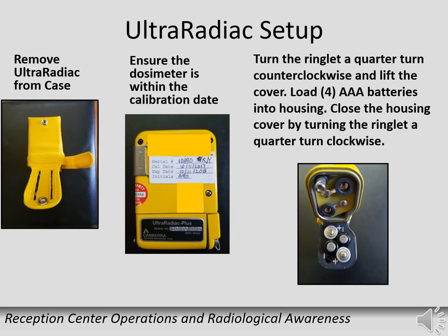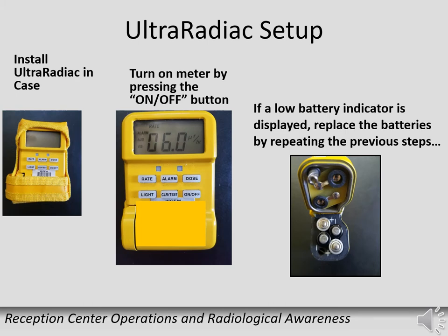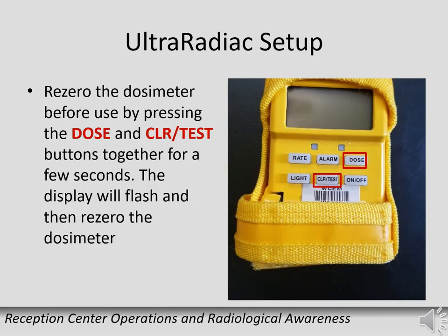Turn the ringlet one-quarter turn counterclockwise and lift the battery compartment cover. Install four AAA batteries following the polarity markings, close the cover, and turn the ringlet one-quarter turn clockwise. Install the UltraRadiac back in the case and turn on the meter by pressing the on-off button. Allow the dosimeter to stabilize; if a low battery indicator is displayed, replace the batteries before use. To re-zero the dosimeter, press both the dose and clear test buttons together for a few seconds — the display will flash and then show zero.